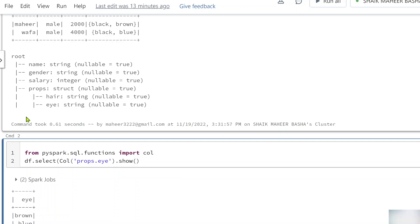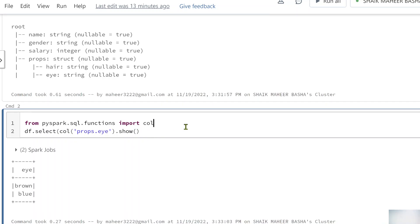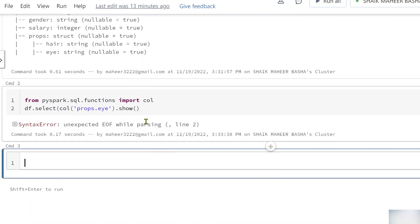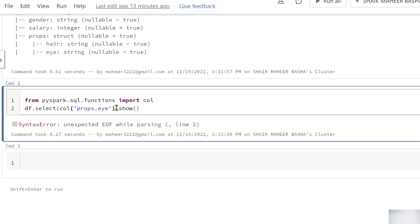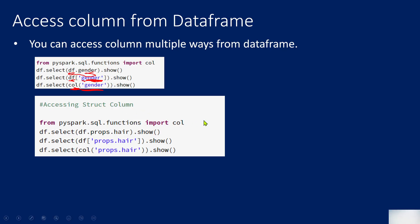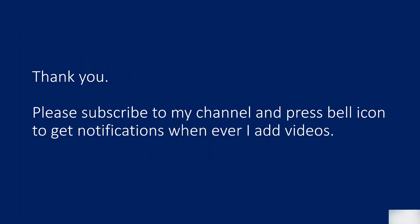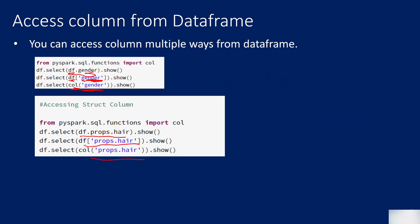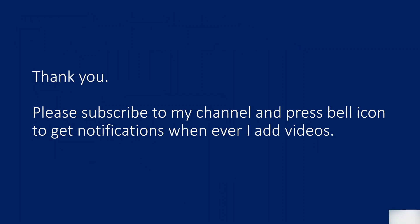Finally, using the `col` function — imported from `pyspark.sql.functions` — with `col('props.i')` inside a select also produces the same result after fixing a bracket issue. To summarize: to create a Column object use the `lit` function; to access a column from a DataFrame use dot notation, indexed syntax, or the `col` function. In the next video we'll discuss useful functions to apply on top of Column objects. Thank you for watching — please subscribe and press the bell icon!